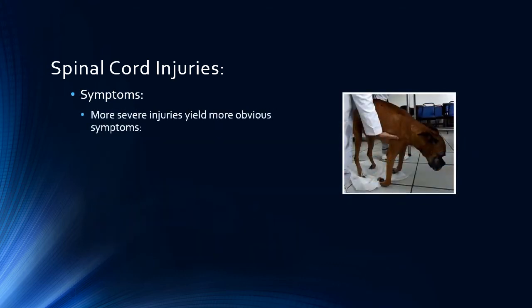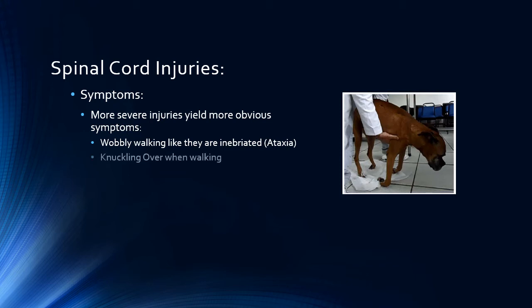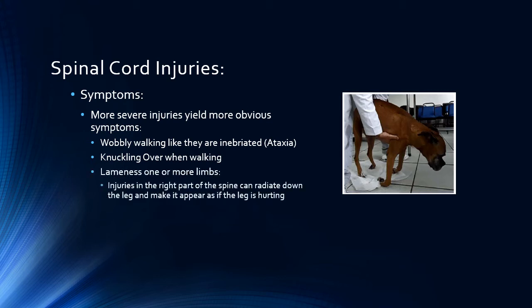With more severe injuries, the symptoms become much more obvious. They include wobbly walking, which we call ataxia, resulting from the message from the limb not reaching the brain, so the brain is not sure where to place the foot. Owners may notice knuckling of one or more feet when walking. Many times the pet appears lame in one or more limbs — this can occur if the nerves in charge of that leg are irritated and pain radiates down the limb, causing the pet to hold it up. As the injury gets worse, pets may drag one or more limbs, may not be able to get up, or may not be able to walk at all.